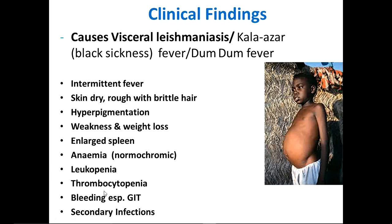When platelet count falls, the patient is prone to bleeding tendencies. Since Leishmania can invade the immune system, there can be secondary bacterial infections. The anemia type is hemolytic normochromic, similar to that seen with malaria parasites.